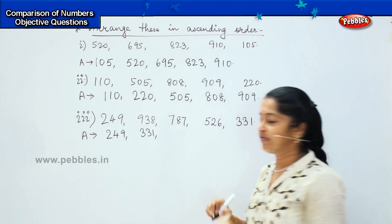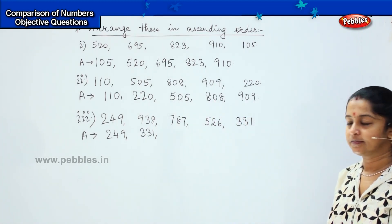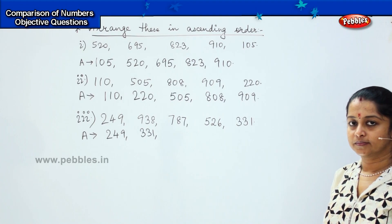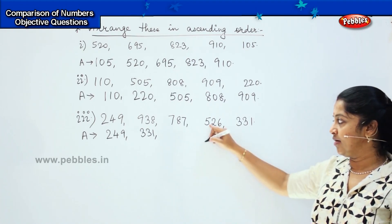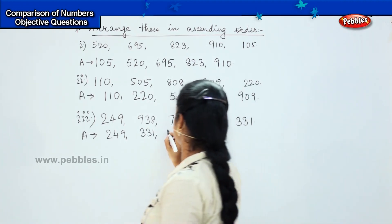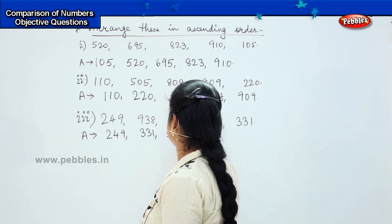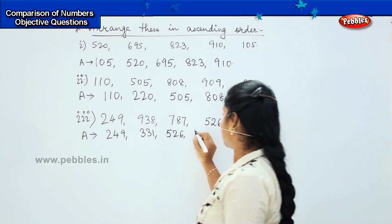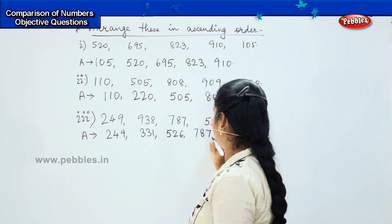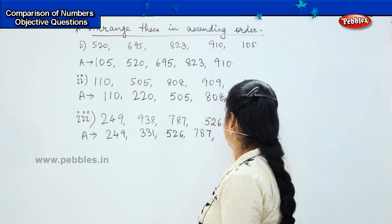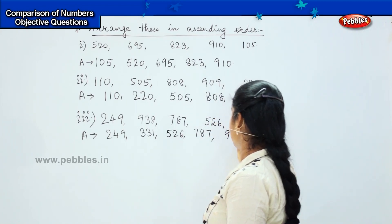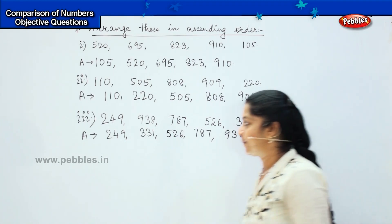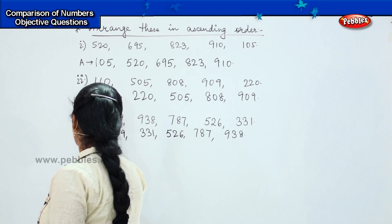What is the next one after 331? Very good, it is 526. Then comes 787, and finally it is 938.